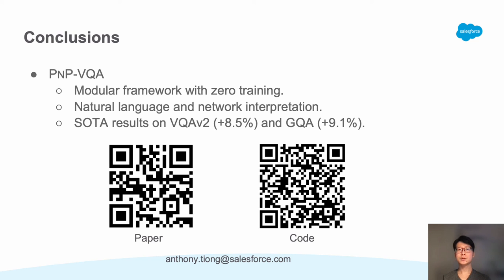To conclude, we developed PNP-VQA, a modular framework with zero training. It conjoins multiple pre-trained models using natural language and network interpretation as interface. It achieves state-of-the-art results on VQA-V2 and GQA. We hope our work can inspire more research in exploring modular frameworks to solve visual language tasks. Thank you for your attention.